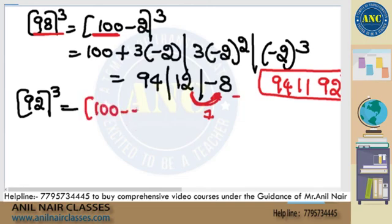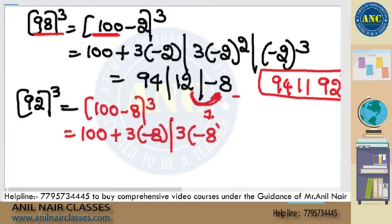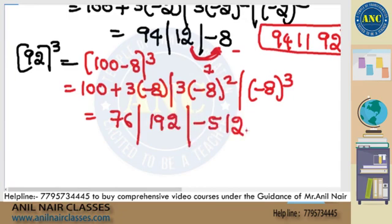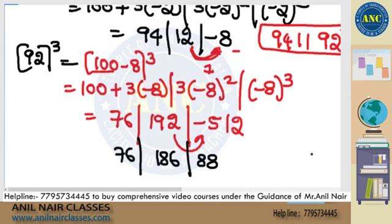92 is 100 minus 8 power 3. Which is nothing but B plus 3x. Next is 3x square. Next is x cube. 80 is 76. 643 is 192. Minus 8 cube is minus 512. If I take a 1 carry, 1 is carried on a base of 100. 600 minus 512 is 88. 192, 6 carried. 186. 76. 88. 86. 1 carried 77. 778688.